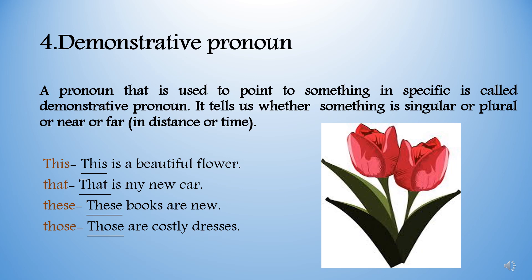Demonstrative pronoun. A pronoun that is used to point to something specific is called a demonstrative pronoun. It tells us whether something is singular or plural, or near or far in distance or time. Examples: This is a beautiful flower. This is my new car. These books are new. Those are costly dresses. In the example 'This is a beautiful flower,' we are talking about a specific flower which is singular and near in distance.